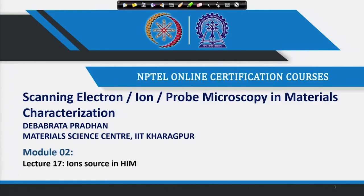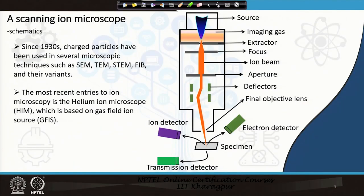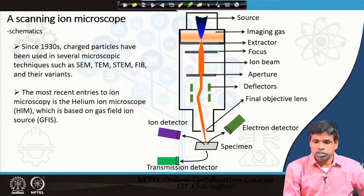Welcome back. In our last lecture I described the advantage of ions in scanning microscopy as compared to electrons. Today we will see how ions are generated in the helium ion microscope. Let us first see a schematic diagram of the scanning ion microscope before we talk about the ion source.